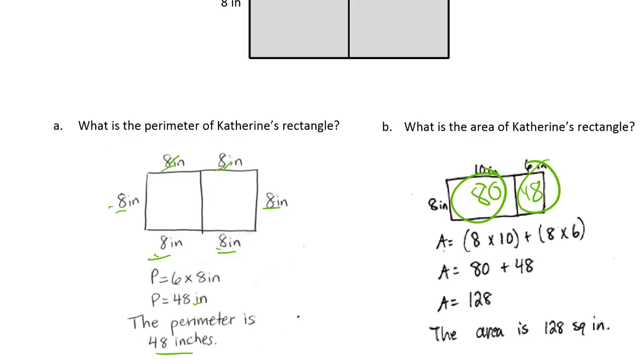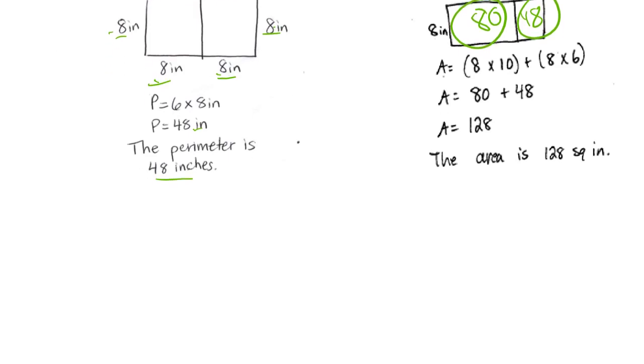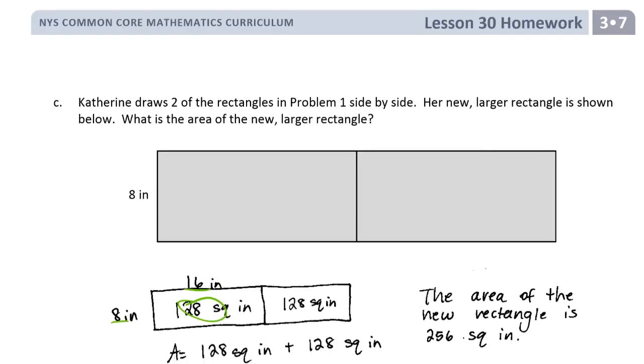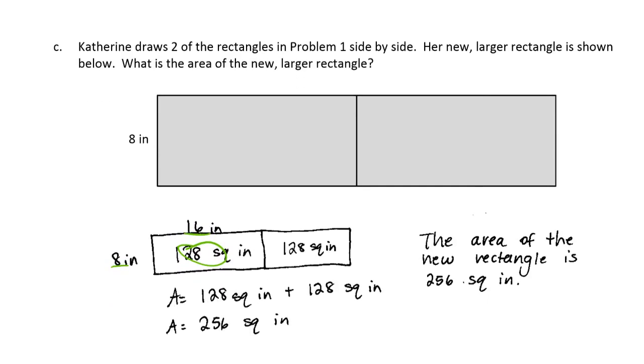The area's 128 square inches. There's another one here, part C. You can see she did the same strategy here for two rectangles side by side, figuring out the area of the new larger rectangle. She figured out 8 times 16 and that was 128. She could have had a little more there about how she figured out 8 times 16 because I don't see that.